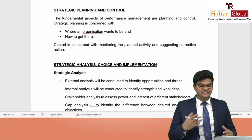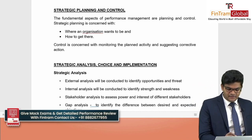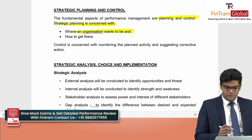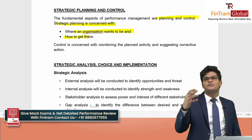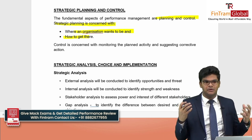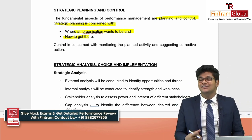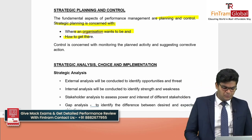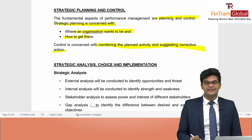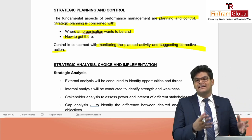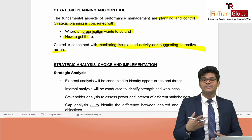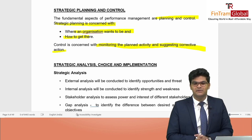Strategic planning is concerned with where an organization wants to be and how to get there — we set objectives and plan the course of action. Controlling is about monitoring planned activities and taking corrective action — we compare planned activities with actuals, identify deviations or variances, and take corrective action to reduce the gap.